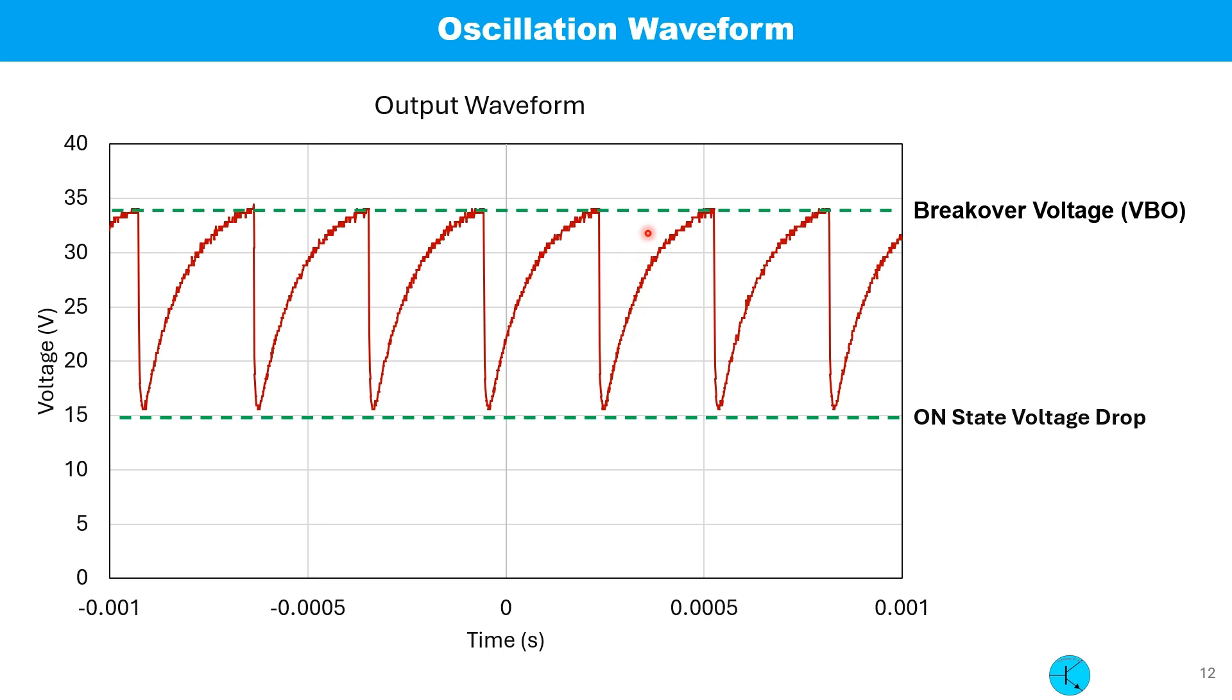This plot shows the two voltage levels for the oscillation. The lower one is the on-state voltage VF, around 15 volts. And the top is the breakover voltage or VBO, which is around 34 volts.